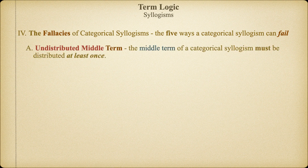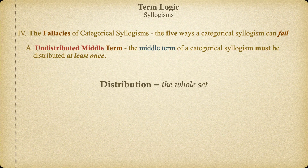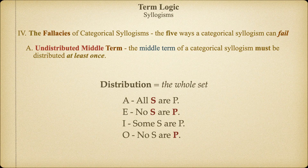We'll start with the fallacy of the undistributed middle term. Remember, distribution exists when either the subject or predicate term of a categorical proposition is inclusive of all members of that set. In the A proposition, the subject is distributed. In the E proposition, both subject and predicate terms are distributed. In the O proposition, the predicate is distributed. There is nothing distributed in the I proposition. We're now going to see why learning distribution was so important.